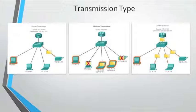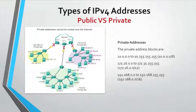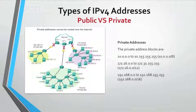In all three cases, the IPv4 address of the originating host is placed in the packet header as the source address. Most IPv4 host addresses are public addresses designed for use in networks accessible on the internet. There are also blocks of addresses used in networks that require limited or no internet access; these addresses are called private addresses.